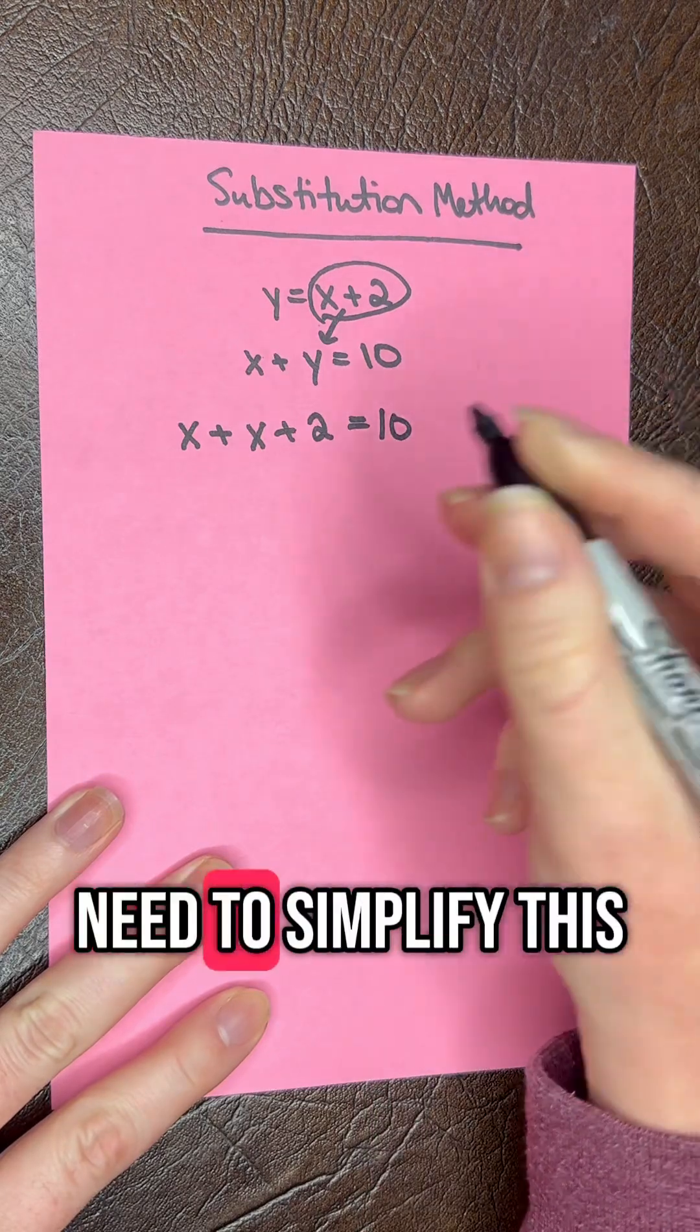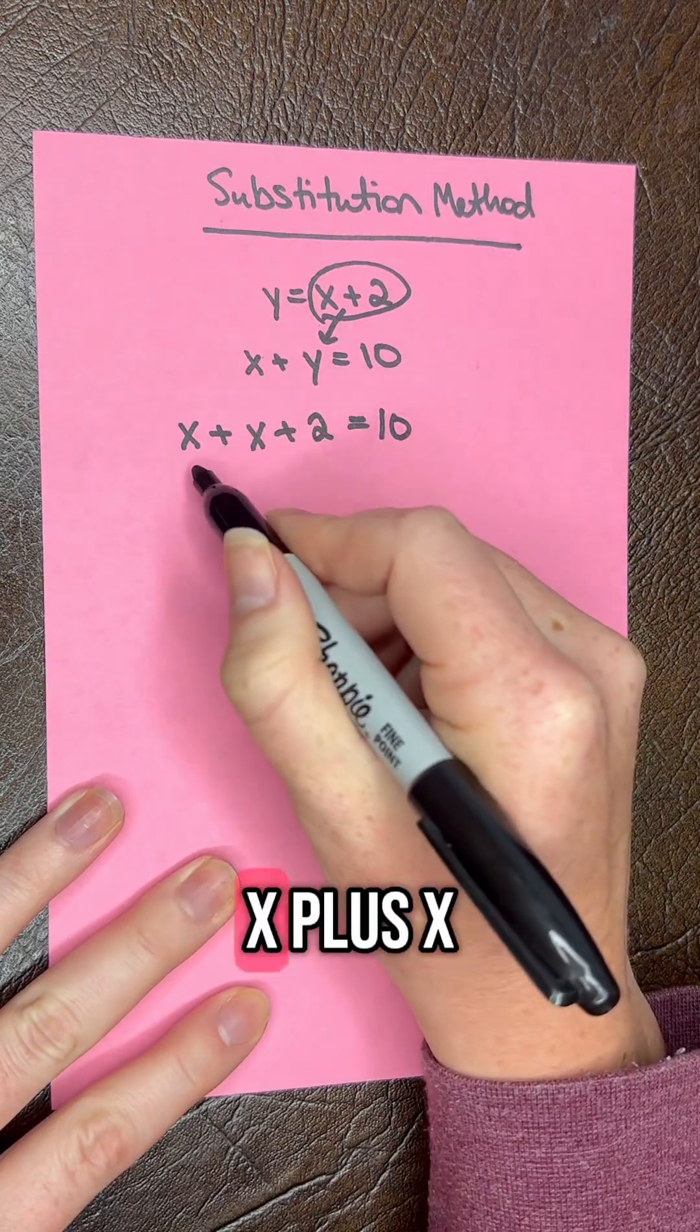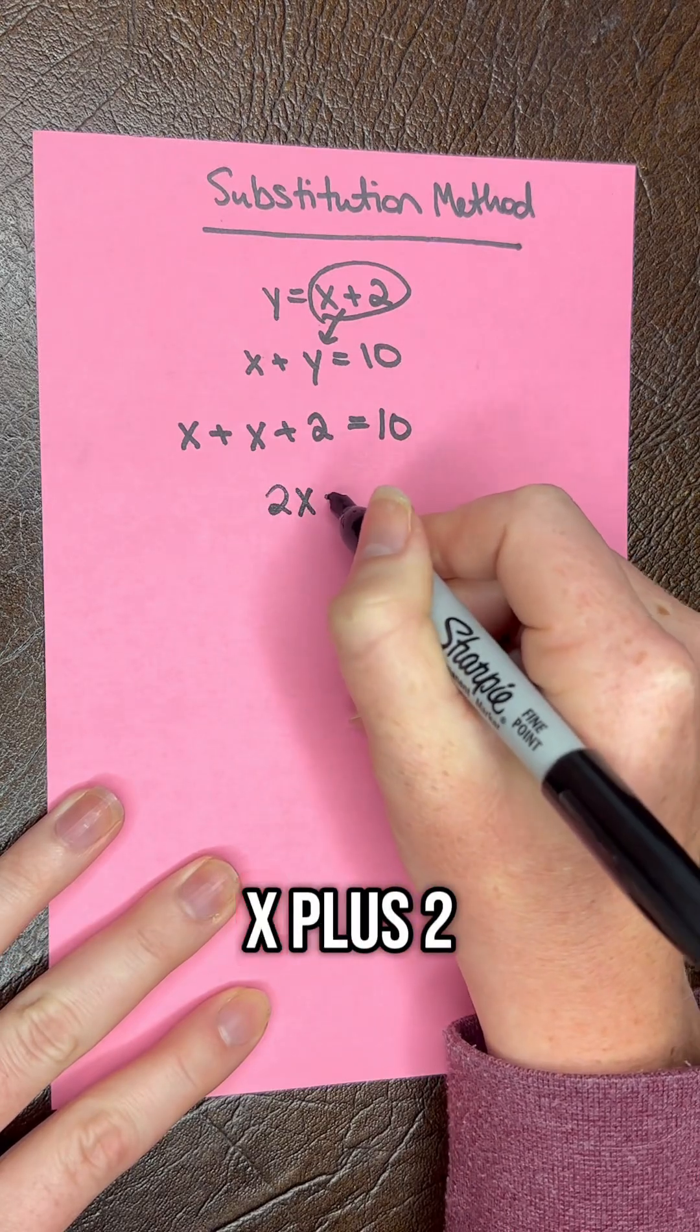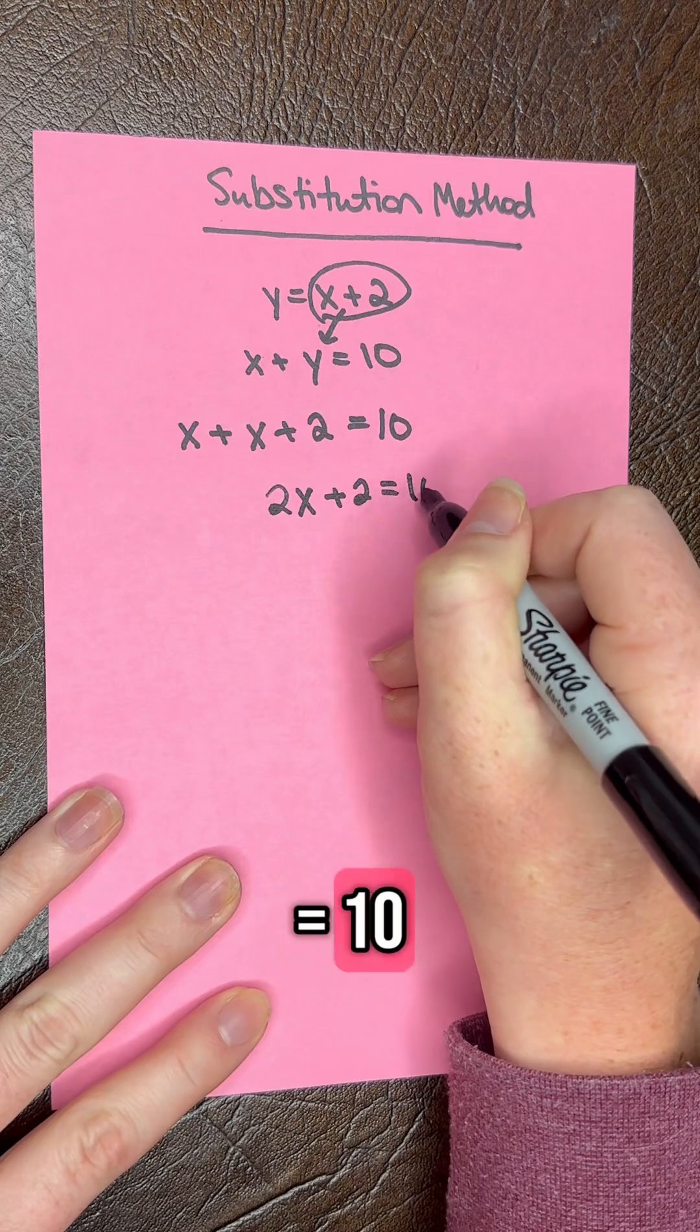And now we need to simplify this. So we have x plus x. We're going to combine those like terms. It's going to give us 2x plus 2 equals 10.